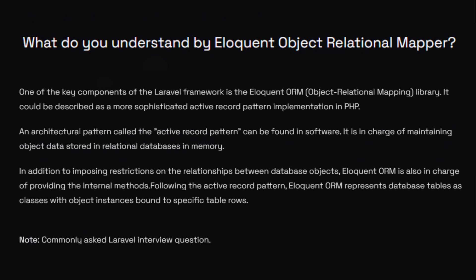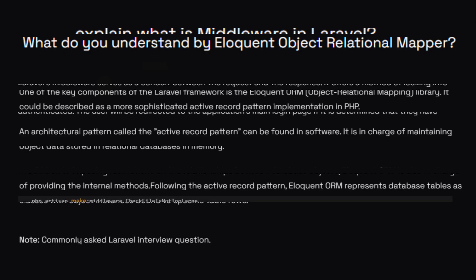What do you understand by Eloquent Object Relational Mapper (ORM)? One of the key components of the Laravel framework is the Eloquent ORM. It can be described as a more sophisticated active record pattern implemented in PHP. Eloquent ORM represents database tables as classes, with object instances bound to specific table rows.